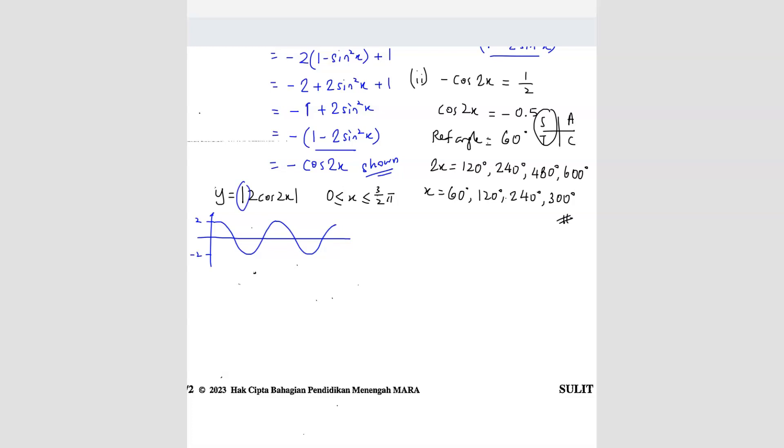And then modulus. So that means there is no negative graph. So that means this part here doesn't exist. Because there is no negative. Everything must turn into positive. So it becomes like this. So this side all no more. This side all no more.